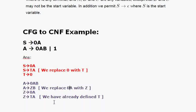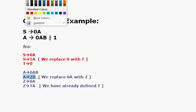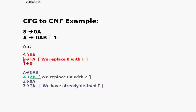Our final set of CNF rules is: S → TA, T → 0, A → ZB, and Z → TA. Using these rules, we have successfully converted the original CFG into Chomsky Normal Form with a clean set of CNF-compliant productions.